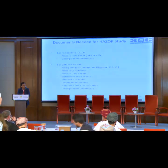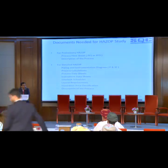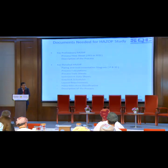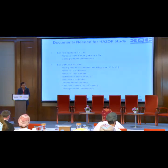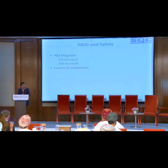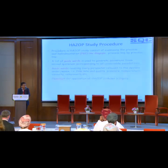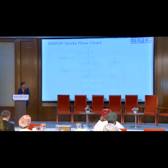For a preliminary hazard study, you need the process flow sheet and a description of the process. For detailed hazard studies, you need the PID, process calculations, instrument data sheets, and the interlock system. The PID — the Piping and Instrumentation Diagram — is very important. While doing the hazard study, you have to use the guide words and flow charts. These are the basic flow charts followed during the hazard study.